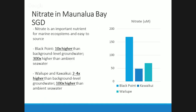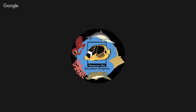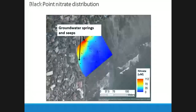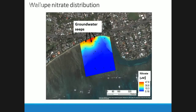Looking at the plots: at Black Point, the nitrate follows a similar distribution to salinity — highest close to the source, mixing with marine water which is close to zero, with the plume extending out to the side due to currents. Wailupe shows a similar trend; the nitrate extends out around 150 meters, reaching a concentration of nearly 50 micromolar.